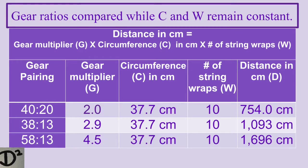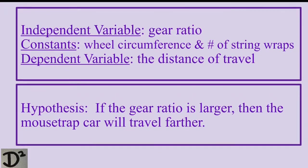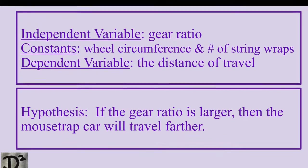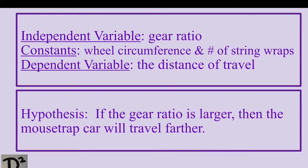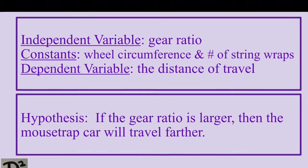Take a look at the predictions. In a controlled experiment, the manipulated or independent variable is the gear multiplier and the wheel circumference is held constant at 37.7 centimeters. The number of string wraps is held constant at 10. This mathematically illustrates the effect that gear ratio has on the dependent variable, the distance traveled in centimeters. We can hypothesize if a larger gear ratio is used, then the mousetrap car will travel farther.